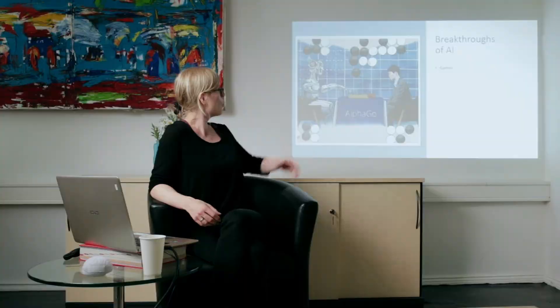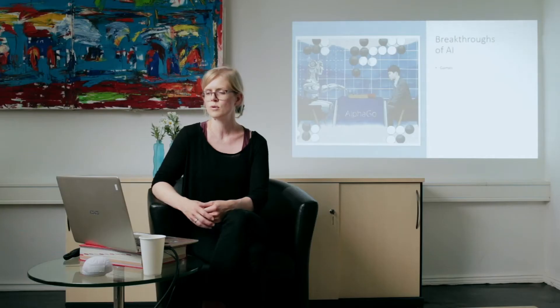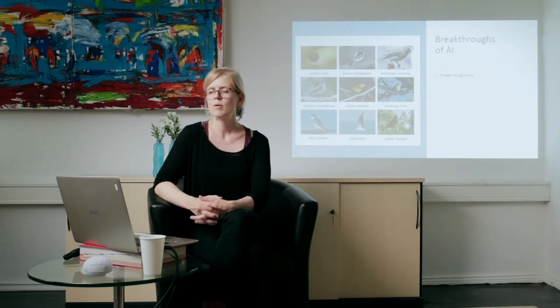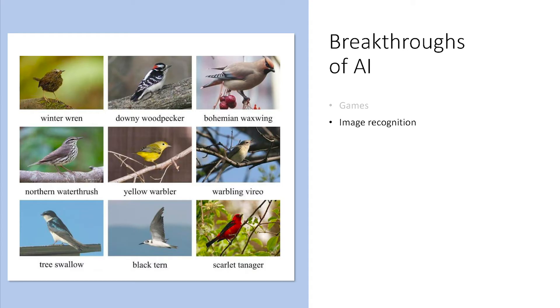Today when we talk about AI, we mainly mean machine learning or deep learning. There is this broad field of artificial intelligence; a subfield of it is machine learning, and a subfield of machine learning is deep learning. Traditionally, artificial intelligence has mostly been about rule-based learning — you define a certain set of rules, give them to a computer, and the computer sticks to those rules in order to reach a certain decision.